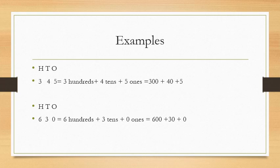Now children, look at the second example: six hundred and thirty. First read the hundreds, then read the last two digits together. Six is at hundreds place, so there are six hundreds, plus three tens, plus zero ones. In expanded form you will write it as 600 + 30 + 0.